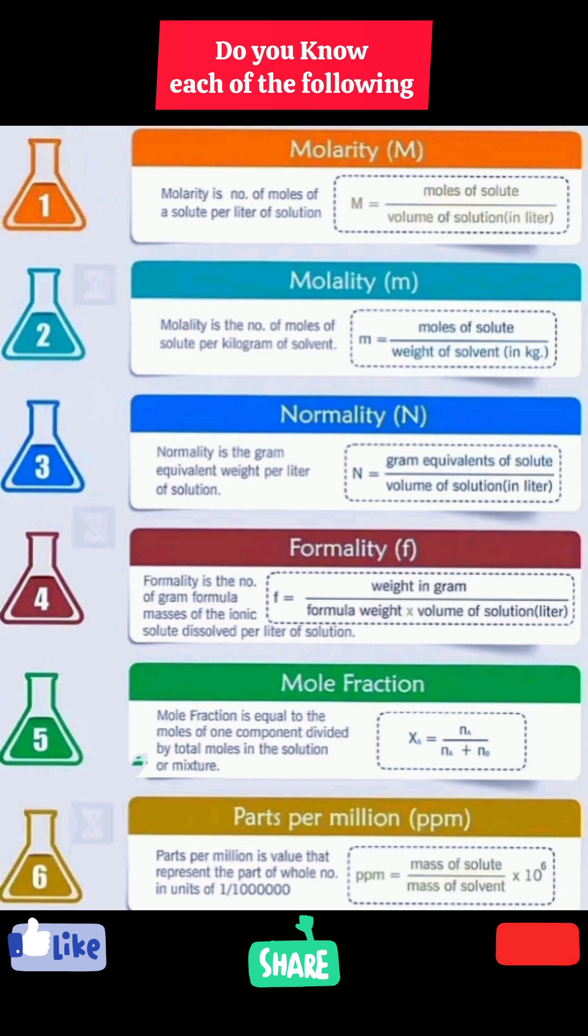So we can write it as x is equal to moles of one component a divided by total number of moles, that is the number of moles of a plus number of moles of b.